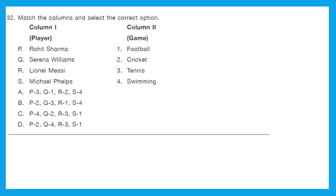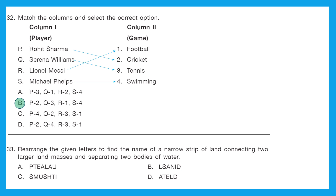Question 32: Match the columns — Column 1 has players, Column 2 has games. P — Rohit Sharma matches to Cricket (P2). Q — Serena Williams matches to Tennis. R — Messi matches to Football (R1). S — Michael Phelps matches to Swimming (S4). So the correct matching is P2, Q3, R1, S4 — the right option is option B.